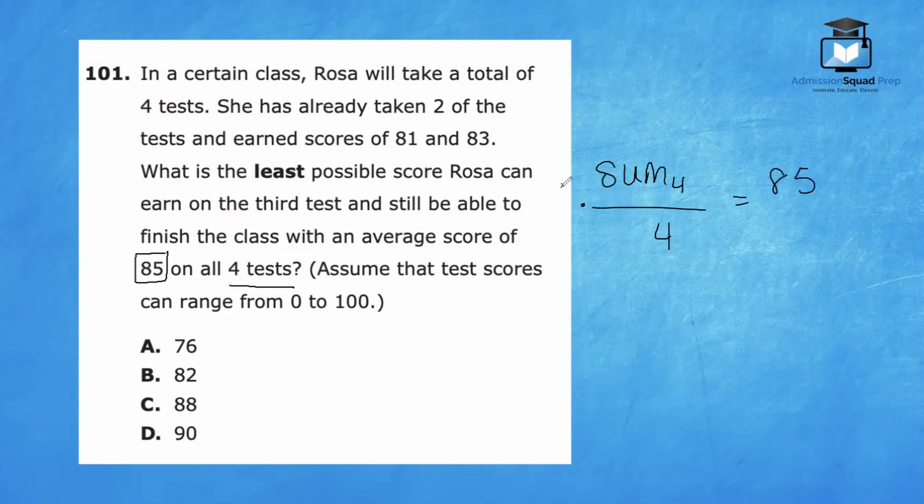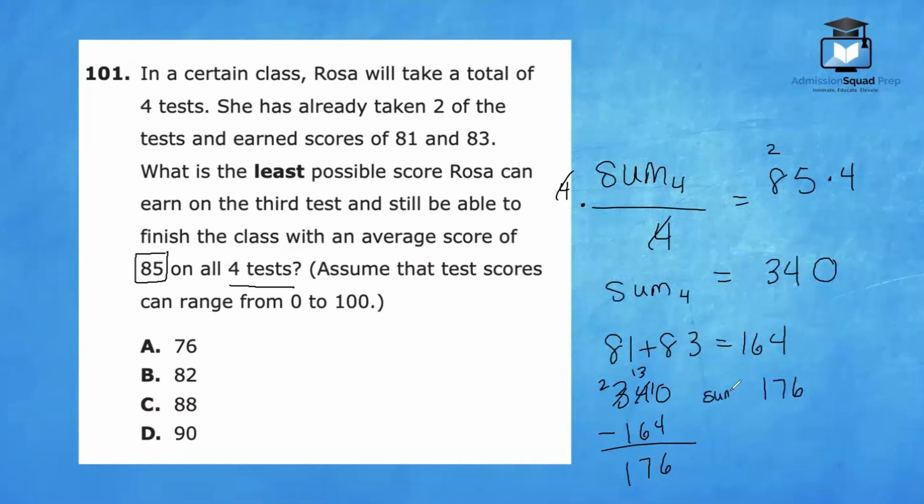The inverse of dividing by four is to multiply both sides by four. These fours will cancel out, and now we can see that the sum of all four tests must be four times five is 20, carry the two. Four times eight is 32 plus two is 34. So all four tests must add up to 340. We have two of the tests already. 81 plus 83 equals 164. Now we need to see what is the sum of the remaining two exams. So we have 340 minus 164. 10 minus four is six. 13 minus six is seven, and two minus one is one.